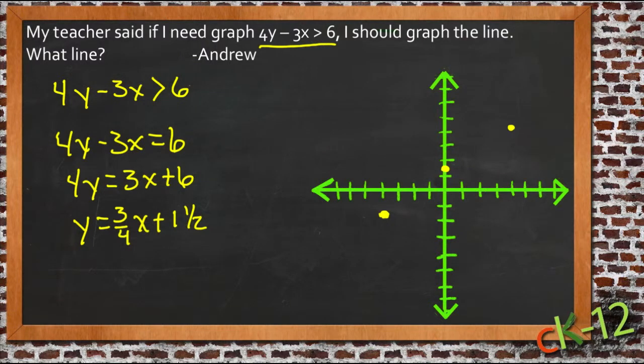So our line then looks like it goes down in this direction here. Now before I draw that in though, I want to point something out. And that is that our original statement was that x and y have to combine to be less than 6, not less than or equal to.